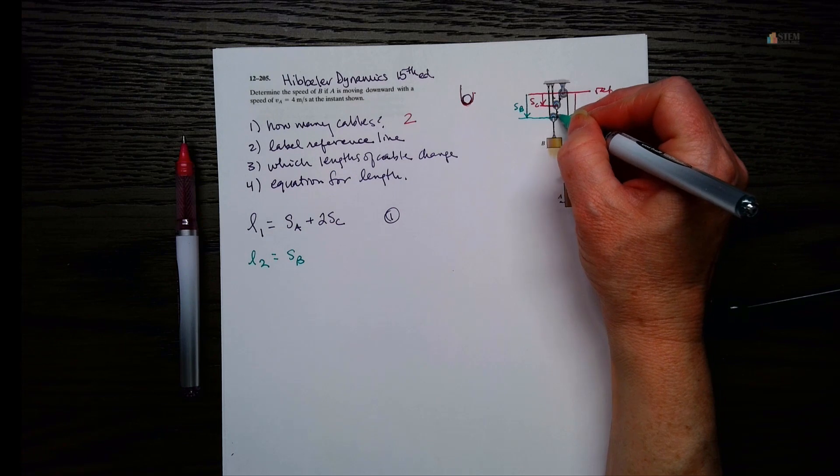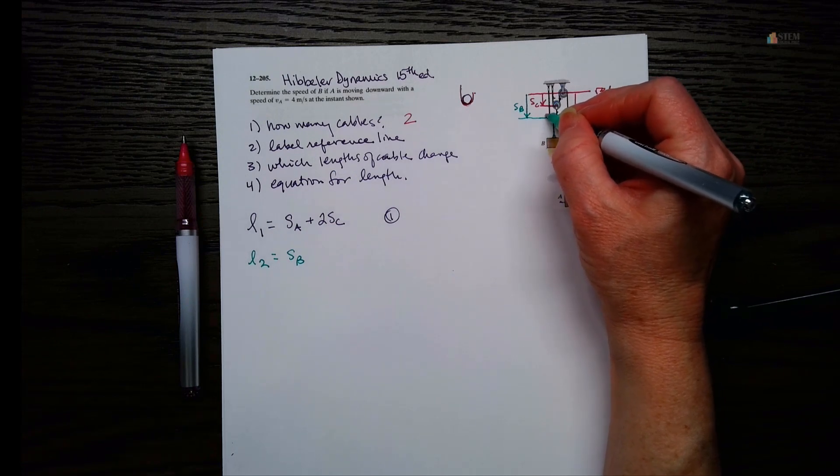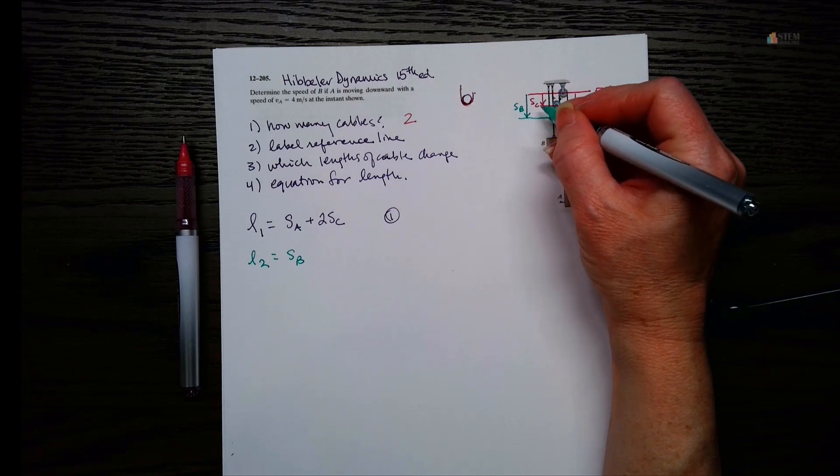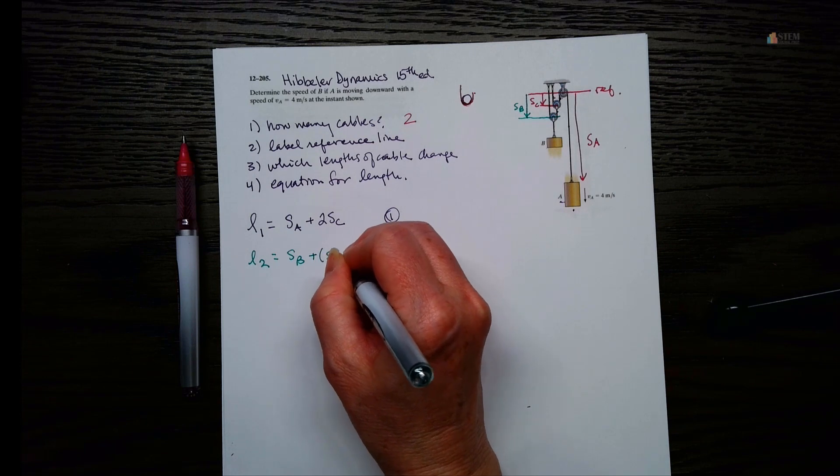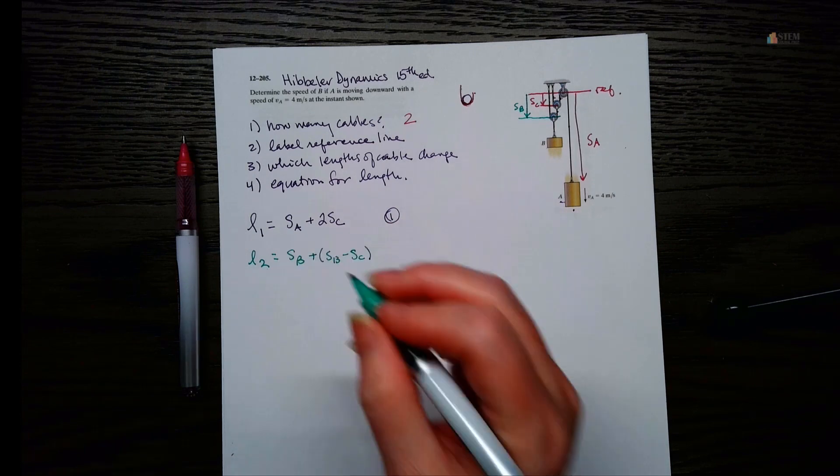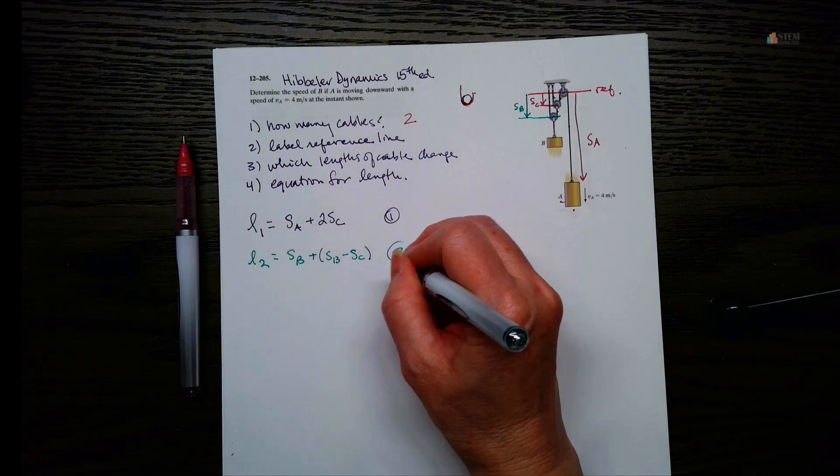And then I need this little piece here. Okay, well, what do we think this length here is? That's what we need, right? So that's going to be SB minus SC. Alright, so we're going to have SB minus SC. That is length two.